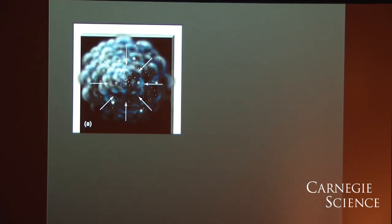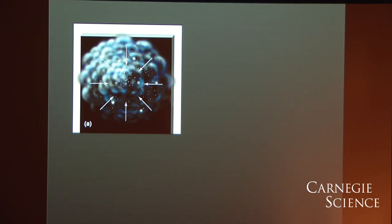If we think about planet formation and we look at an artist's rendition of what that might look like, what we start with is a cloud of gas and dust. That cloud of gas and dust is diffuse and it's spherical and it's slowly rotating. And as it rotates, it starts to collapse.